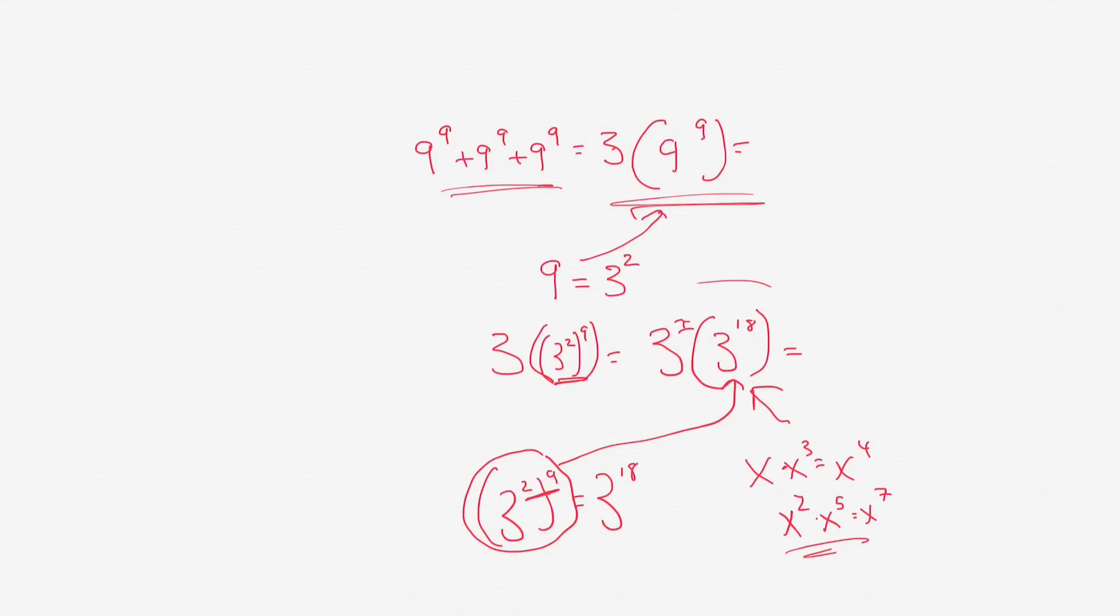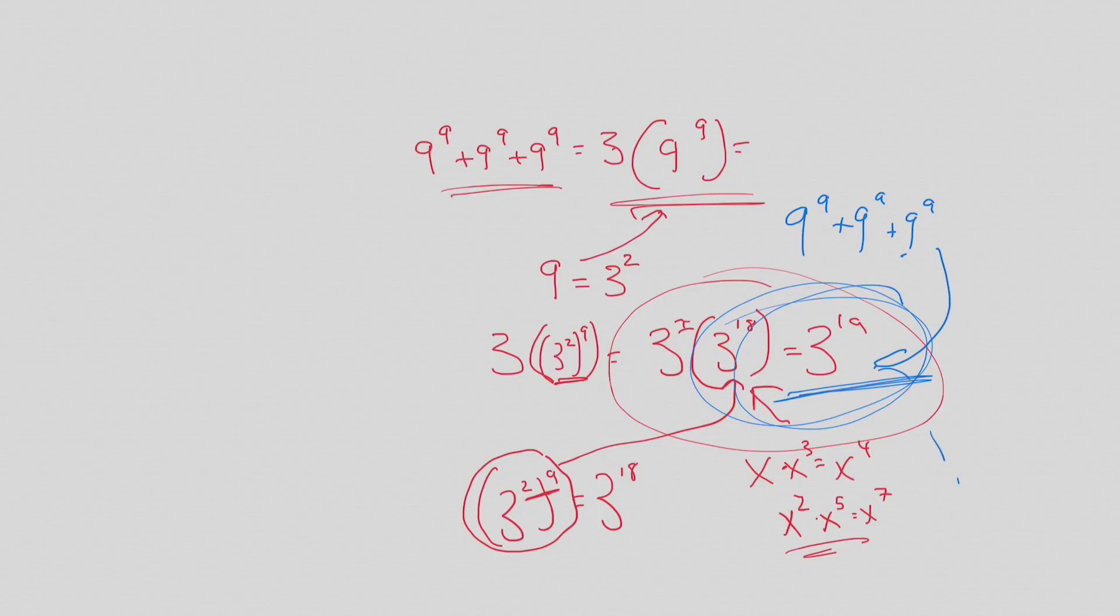So we go back up here. We have 3 to the 1 times 3 to the 18. So we add 1 plus 18. That's 3 to the 19. And that is the answer. So 9 to the 9 plus 9 to the 9 plus 9 to the 9 is equivalent to 3 to the 19. Alright?